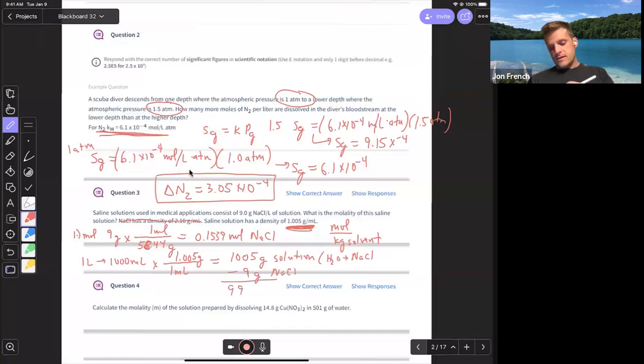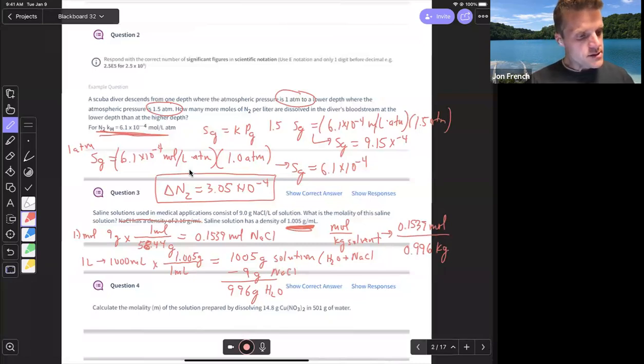And that's going to give me 996 grams of water. And that's what we want to do and use for our molality. So molality, I'm kind of running out of space here, but I've got 0.1539 moles of sodium chloride, and I have that dissolved in 0.996 kilograms of water. So 0.996. And yeah, we get pretty much about the same number. I get a molality of about 0.155 molal for question three.